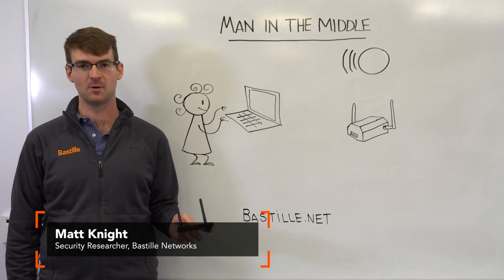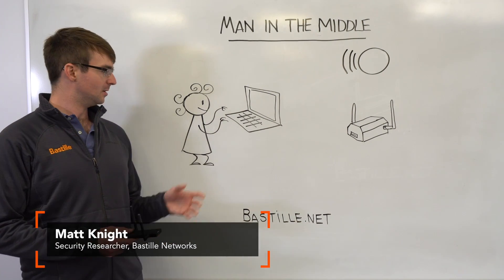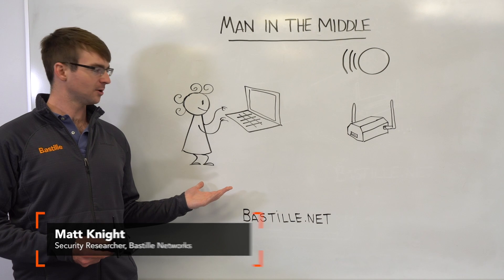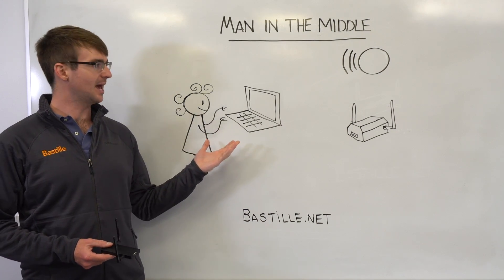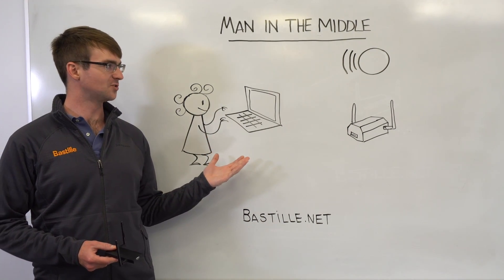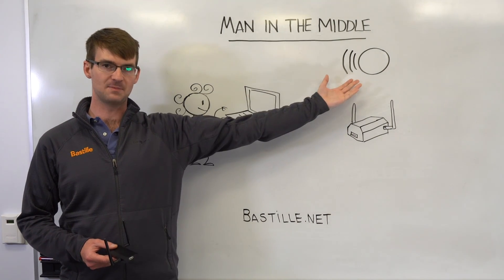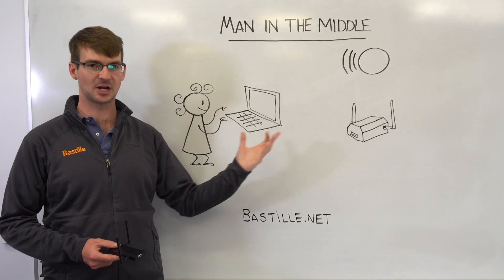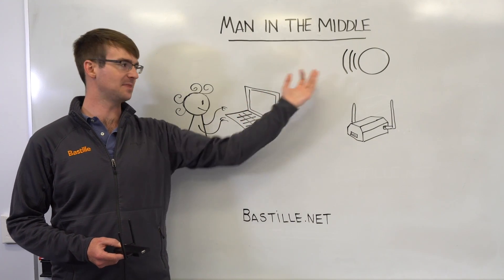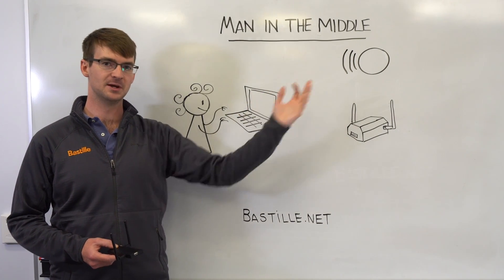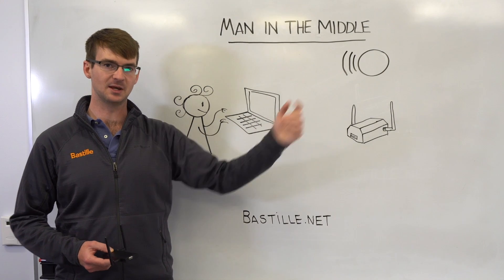I'll briefly explain how a wireless man-in-the-middle attack works. You have an employee using their corporate-owned laptop, which is going to try to connect to your corporate access point. This is a connection set up by IT — the trust relationship already exists between the laptop and the access point, such that the laptop is going to try to reach out and talk to this AP.